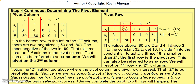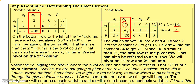Since we're going to pivot on the x2 column, x2 is actually going to become a basic variable — we say x2 is going to enter. And since I'm pivoting on the S1 row, S1 is going to exit — it will leave as a basic variable and become non-basic. So x2 and S1 will trade places.